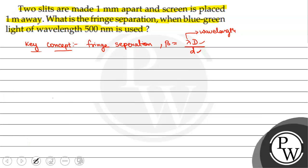Now, the given values are: capital D is 1 meter, small d is 1 mm which equals 10 to the power minus 3 meters, and lambda is 500 nanometers which equals 500 into 10 to the power minus 9 meters.